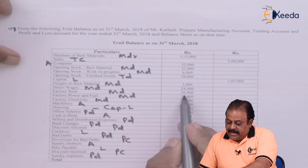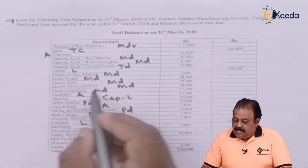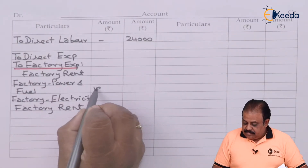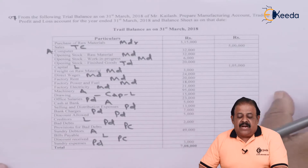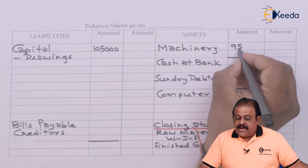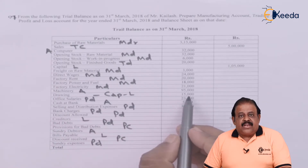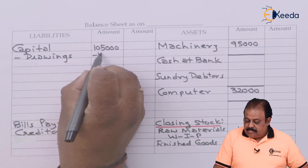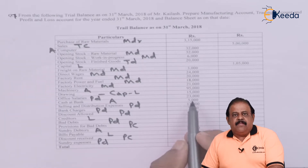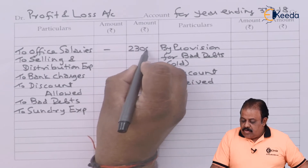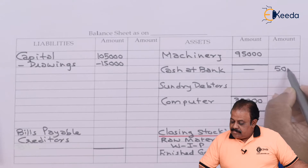Factory rent 20,000 — recorded as factory expense. Factory power and fuel 18,000 — factory expenses. Factory electricity 21,000. Machinery 95,000 — recorded as an asset, in inner column because there is an adjustment of depreciation. Drawings 15,000 — deducted from capital on liability side. Office salaries 23,000 — profit and loss account debit. Cash at bank 5,000 — recorded as an asset.